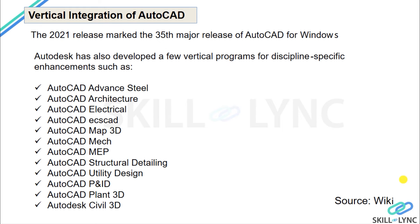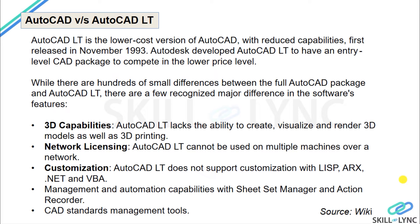Now the question is how to purchase the software. Prior to 2019, Autodesk AutoCAD used to come as a perpetual license. Now Autodesk has moved to a fully subscription-based model available in two versions: a lower-cost version called AutoCAD LT — a lighter version — and the full AutoCAD software.